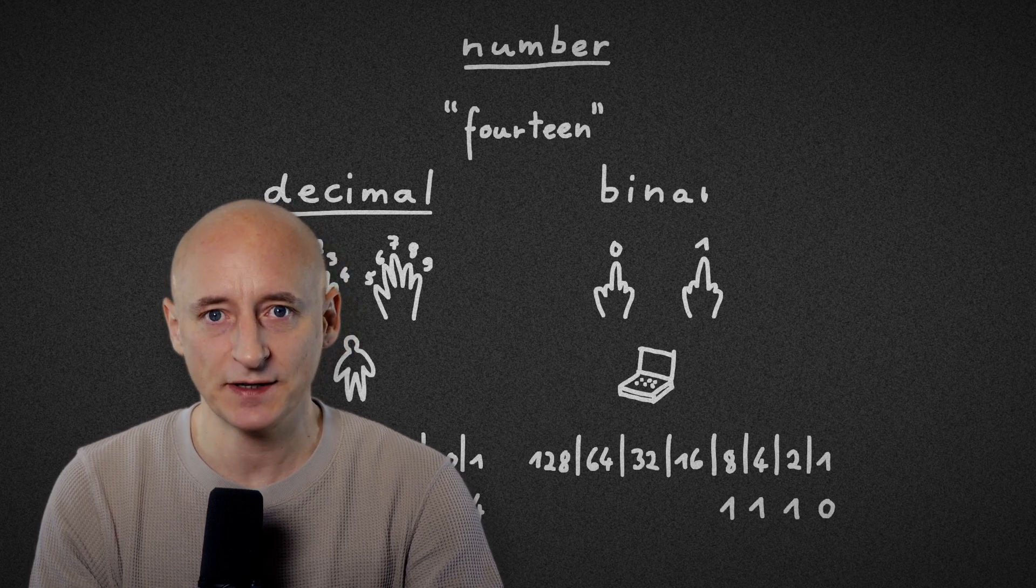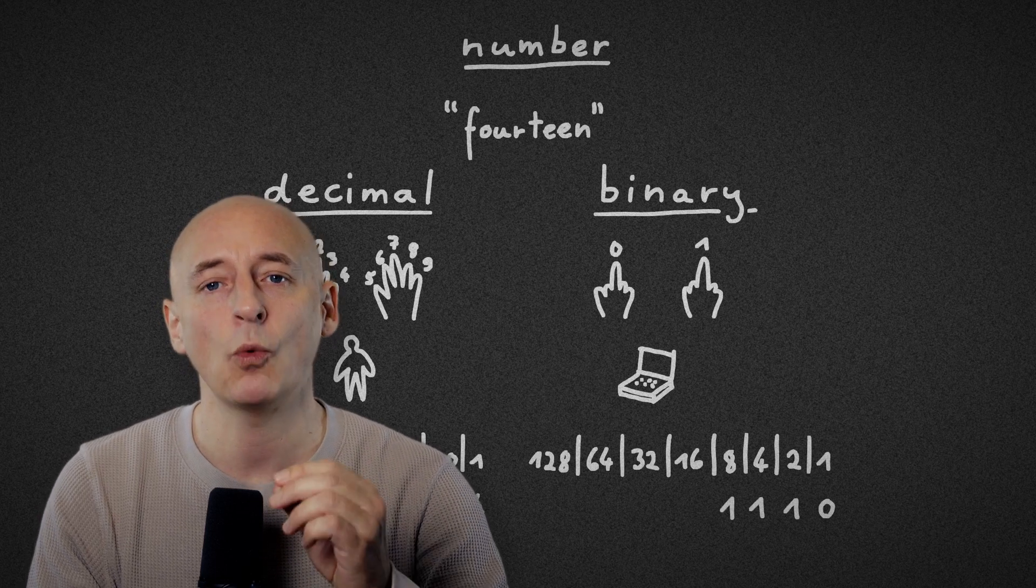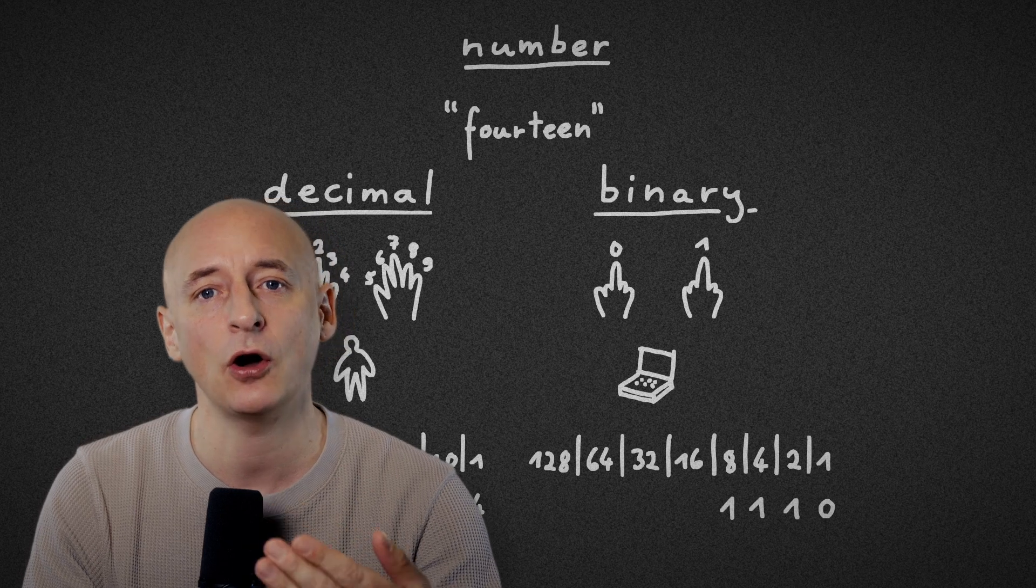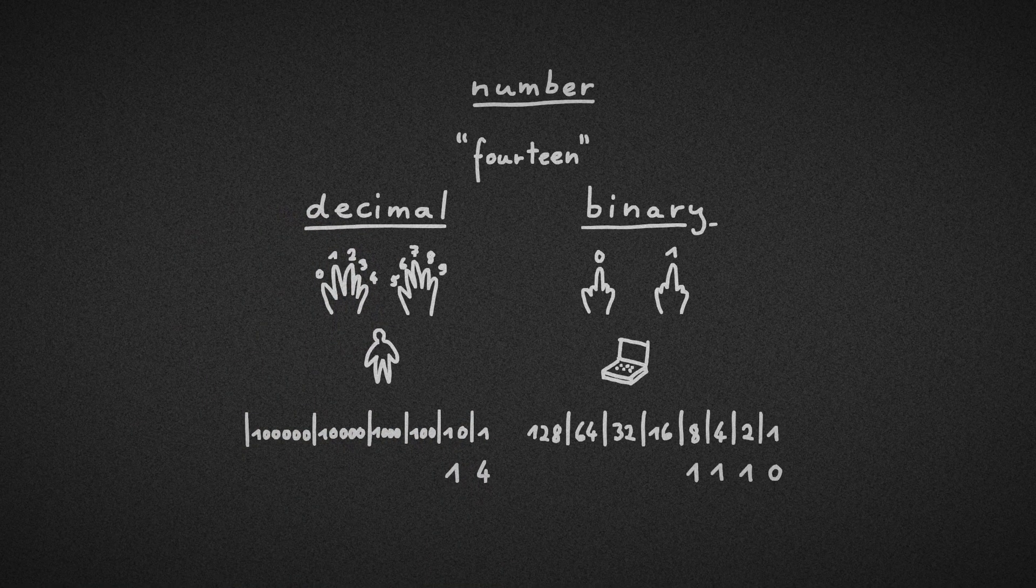With this binary system, we can express any number using only two digits – one and zero, or two states of an electronic circuit – on and off. So as soon as we can translate any type of data into such binary numbers, it can be used by an electronic computer.